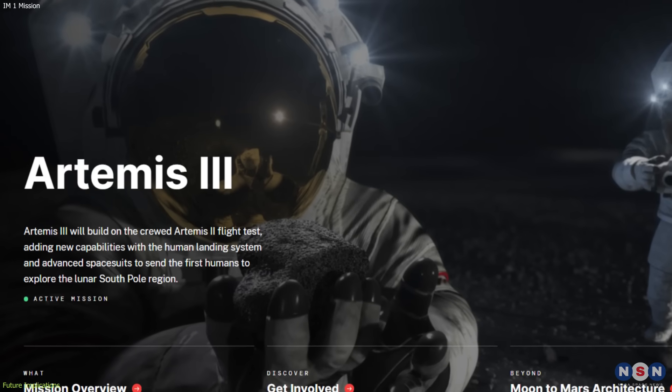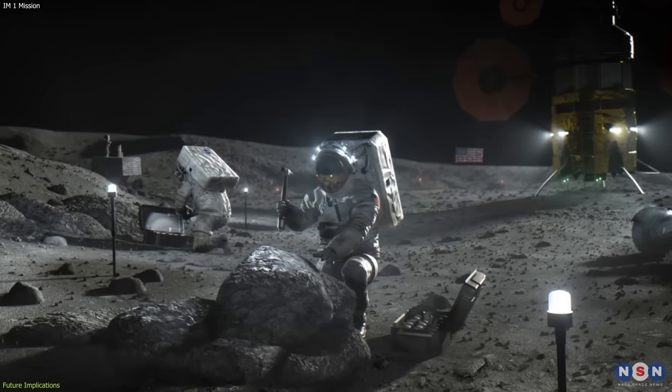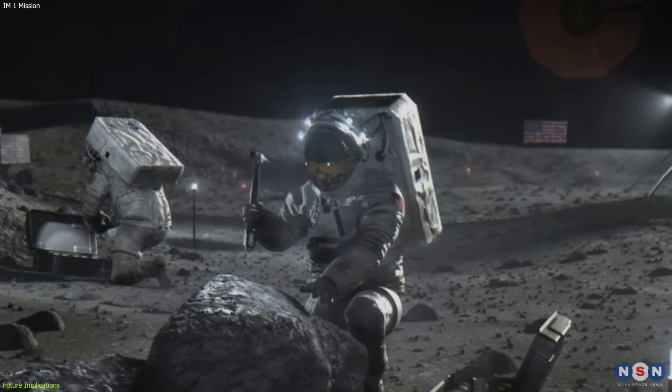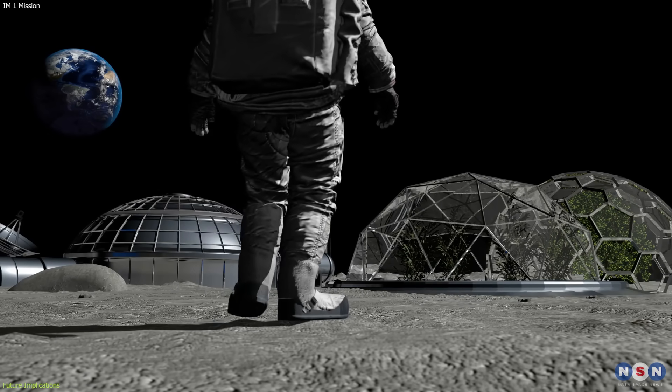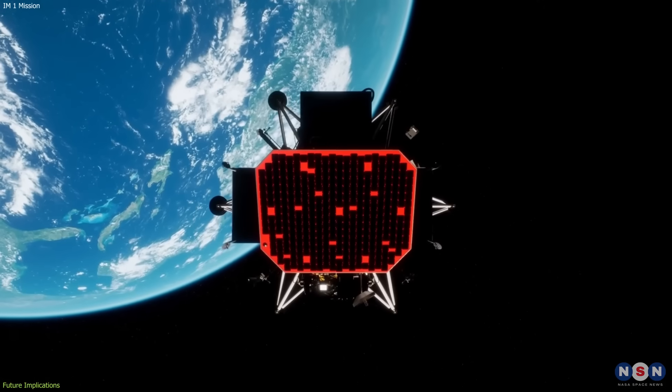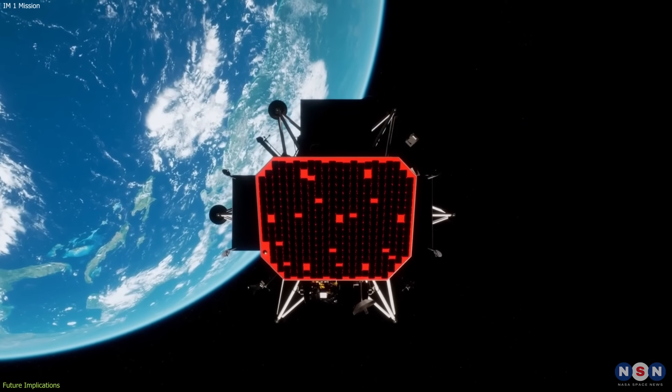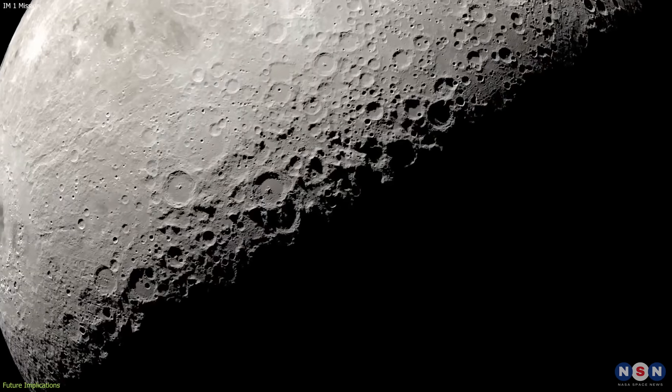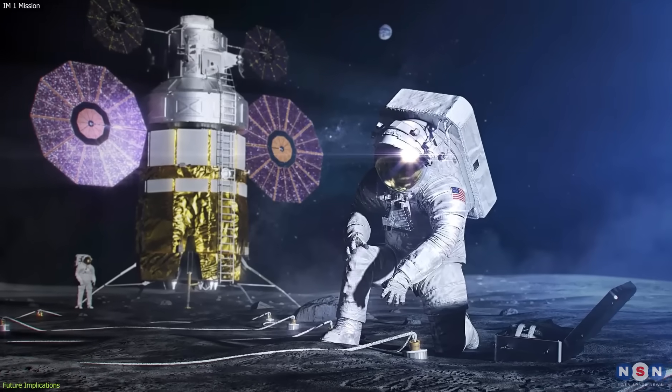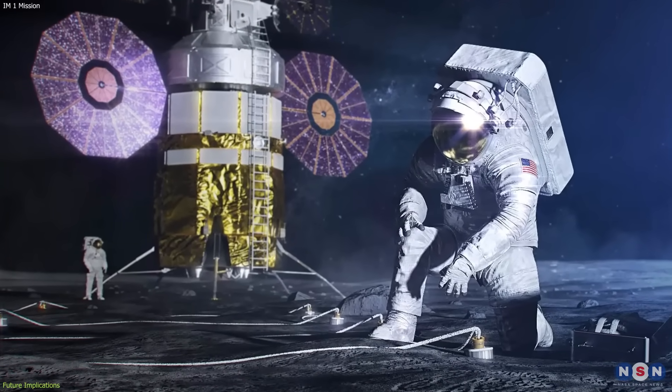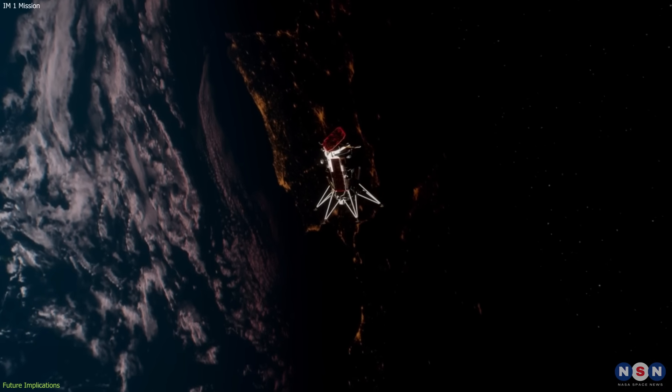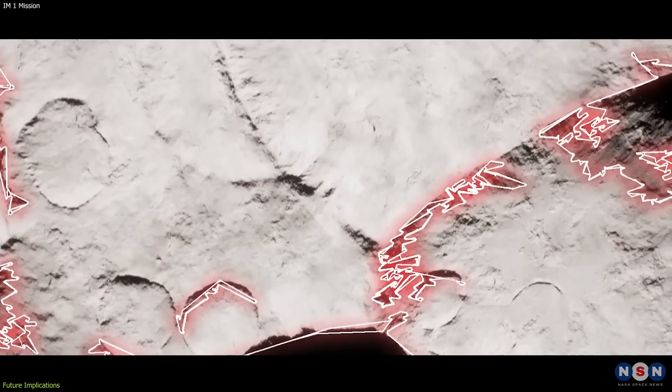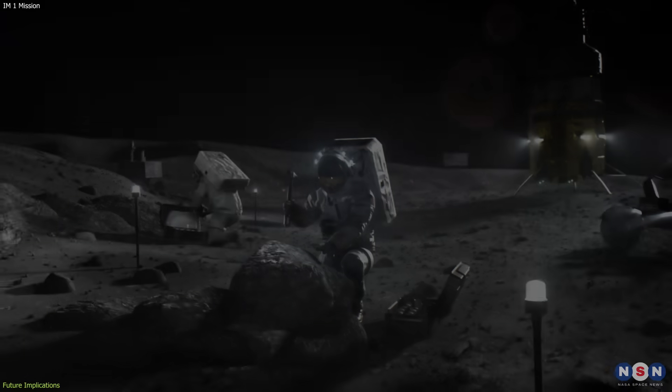This will also relate to the Artemis Campaign, which aims to land the first woman and the first person of color on the Moon by 2028, and establish a sustainable human presence there by the end of the decade. The mission will support the Artemis goals by providing valuable information and experience on the lunar environment, especially the polar regions, which are potential sites for future human landing and habitation. It will also test and validate some of the technologies and systems that will be needed for the Artemis missions, such as navigation, communication, and sample collection.